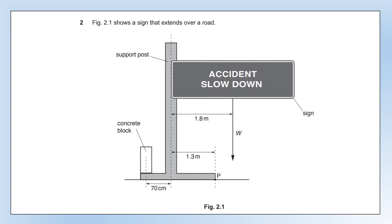Question two. We've got a sign that extends over a road — the base of the sign is here, and this is the part that overhangs the road. We're going to be taking moments about point P. I'm marking on some distances we'll use: the distance of the weight force from P is 0.5 m, and the distance of the concrete block from P is 2 metres.